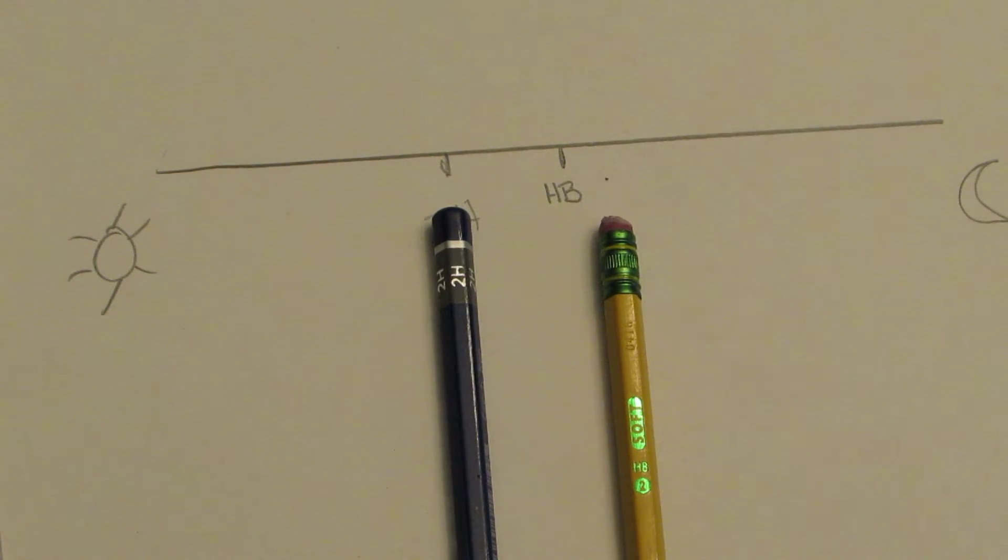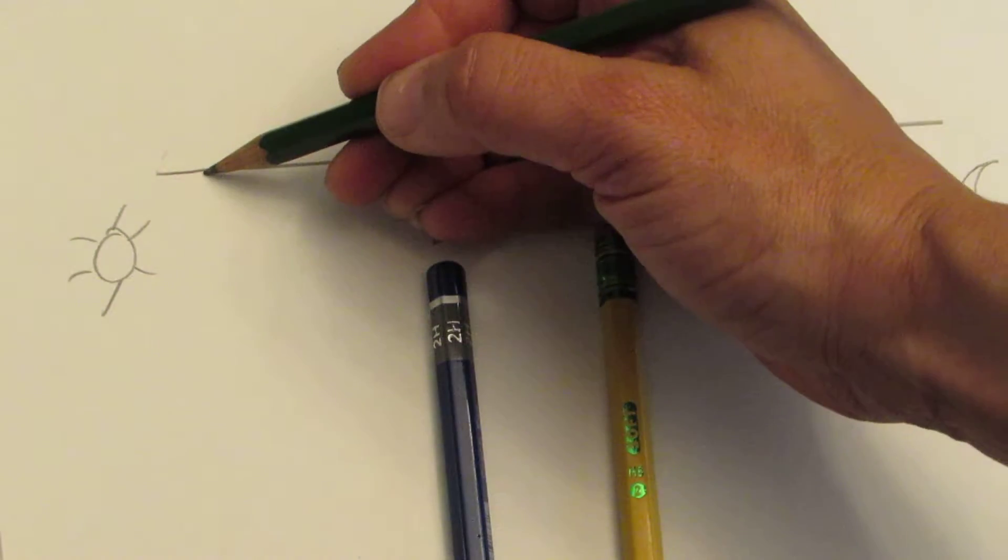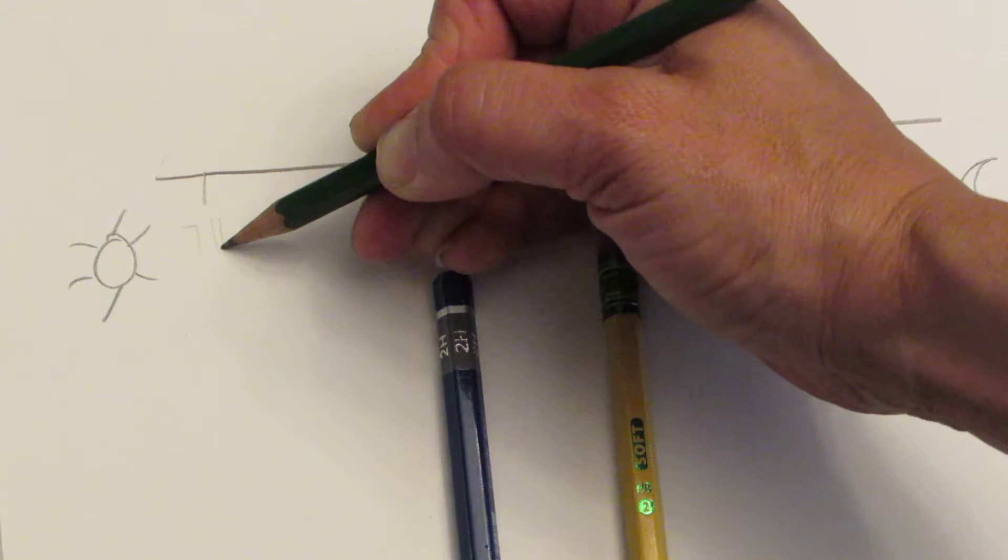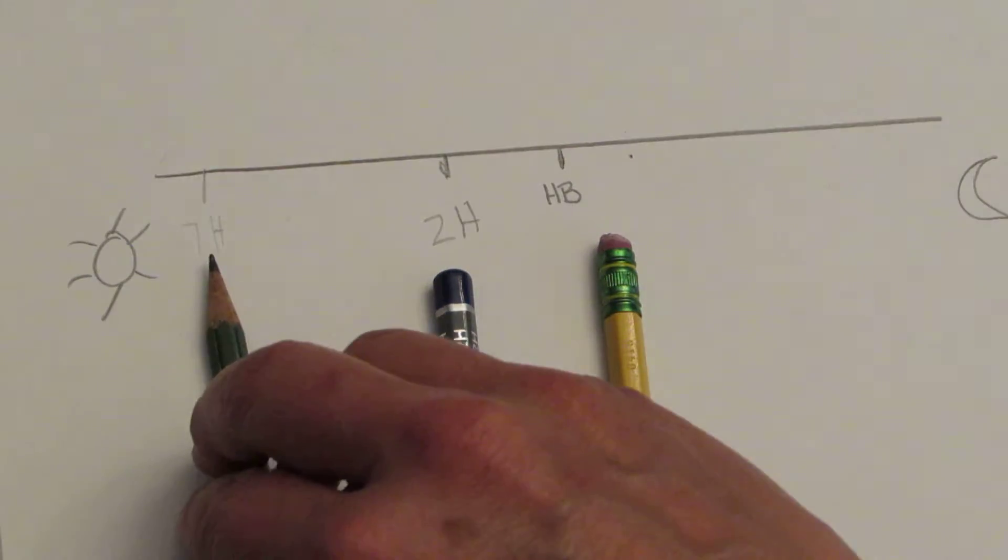Next, what I have is a 7H, so I'm going to jump way down here on the number line. I'll leave a little bit of a gap there so you can kind of see that this is a 7H. That's so light I'm not even sure that the camera is reading that very well, but that's what that one is.